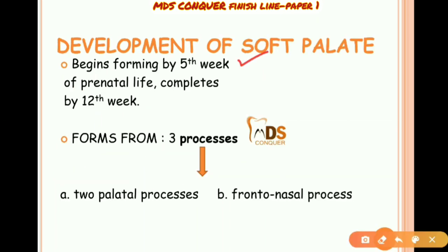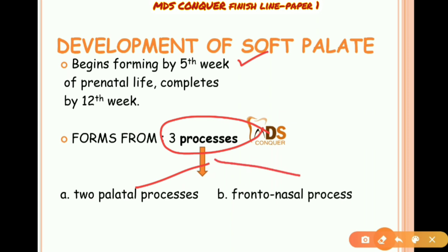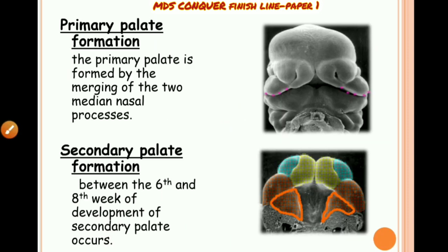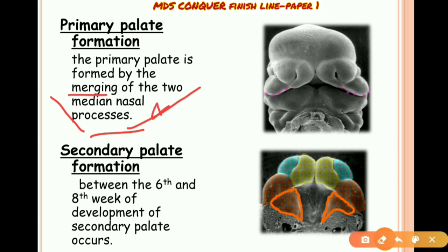Development of the soft palate begins in the fifth week of intrauterine life. It forms from three processes mainly: two palatal processes and one fronto-nasal process. The primary palate is formed by merging of two median nasal processes, whereas the secondary palate formation occurs between the sixth and eighth week of development.